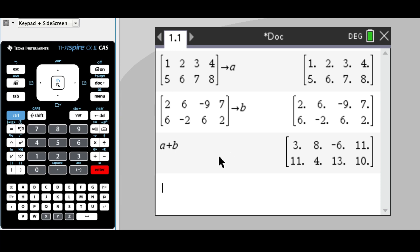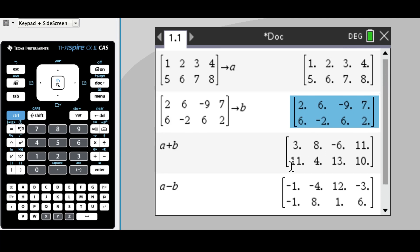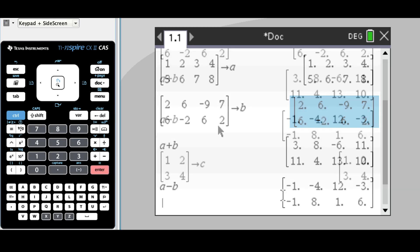If I want to do subtraction, for example a minus b, same process. Now it's taken away the first element minus the second element in each matrix. One minus two is negative one.